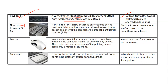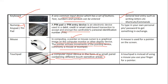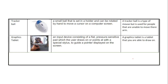Mouse: in computing, a pointer or mouse is a graphical image on the computer monitor. This pointer echoes the movement of the pointing device, commonly called a mouse or a touchpad. The mouse is used as a pointer on the screen. Touchpad: a computer input device in the form of a small panel found on laptops, containing different touch-sensitive areas. A touchpad is used instead of a mouse, operated with the help of finger pointers.